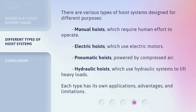There are various types of hoist systems designed for different purposes: manual hoists, which require human effort to operate; electric hoists, which use electric motors; pneumatic hoists, powered by compressed air; and hydraulic hoists, which use hydraulic systems to lift heavy loads. Each type has its own applications, advantages, and limitations.